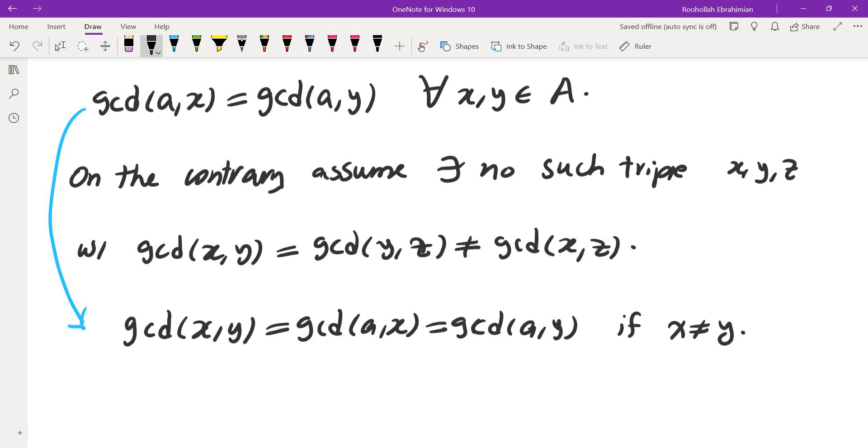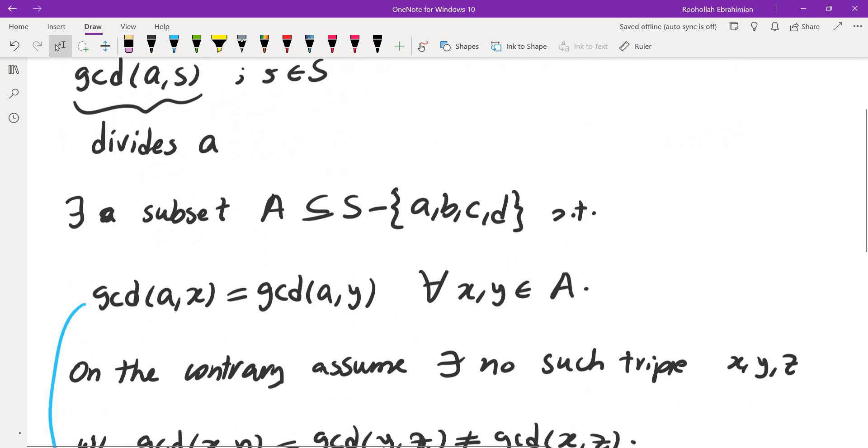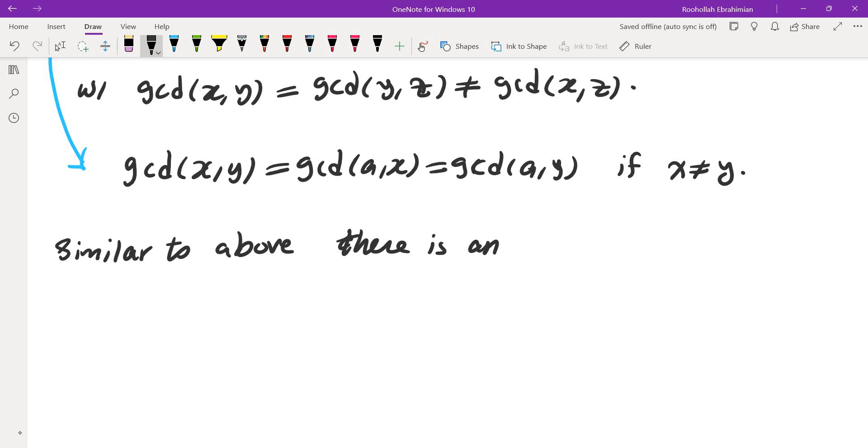Now I'm going to use the same thing for B. I'll repeat the exact same argument for B, but I would like to keep the same condition for gcd(A,X) equals gcd(A,Y). So instead of repeating this process for S, I'm going to repeat this process for A. So similar to above, there is an infinite set B inside A such that for every X and Y in B, gcd(B,X) is the same as gcd(B,Y).